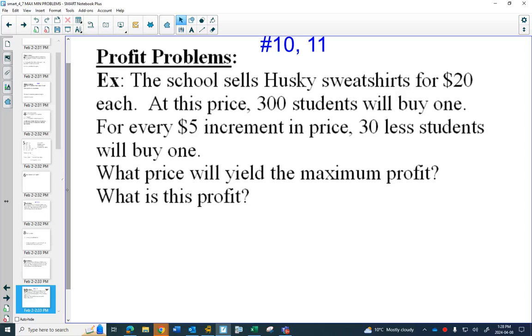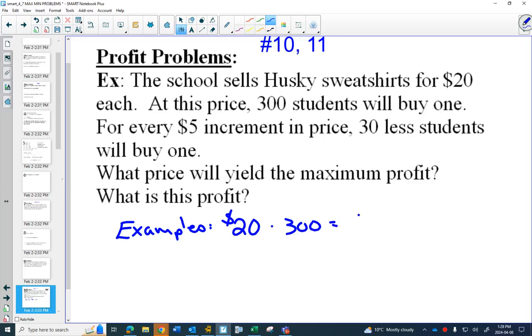So let's just look at some examples first. Before we solve this, sometimes it's nice to see what could happen. First of all, what's their profit at $20? They sell how many? 300. Do you see that the profit would be $6,000? I guess this is assuming there's no cost whatsoever. Someone has donated these and it's all profit.